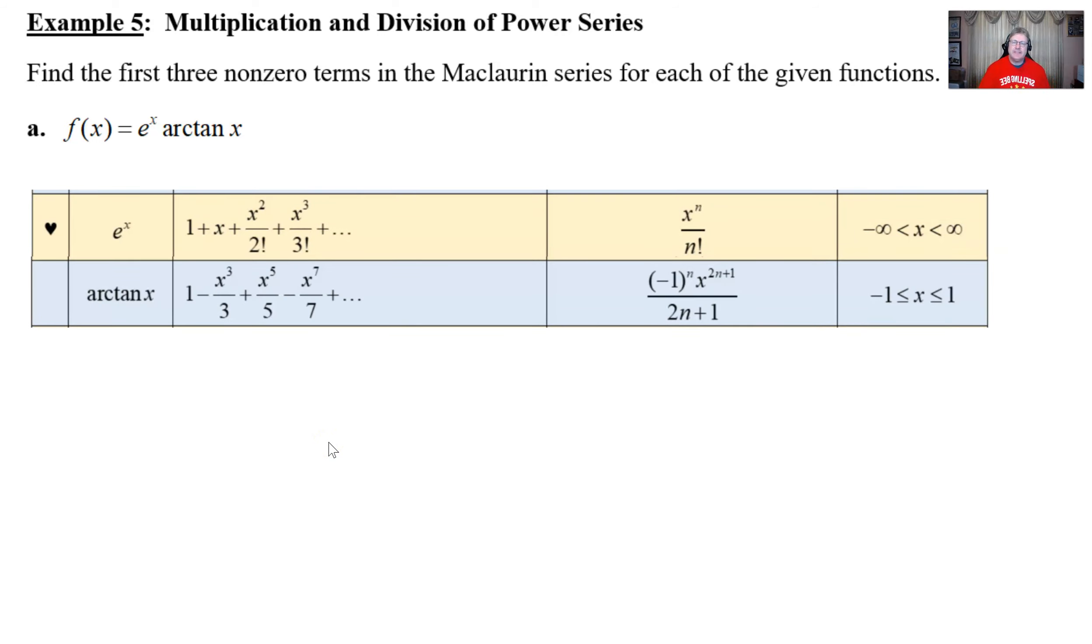Now, I know that the e to the x is perhaps one that you're a little bit more familiar with than the arc tan of x. And I know the arc tan of x doesn't have our coveted heart that indicates that that's one that you typically would really want to know before the BC exam.